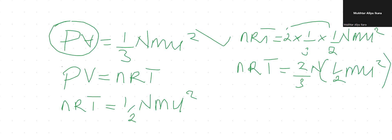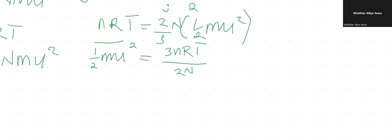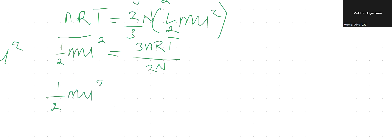We can now make (1/2)mu² the subject of the formula. Cross-multiplying and dividing both sides, we arrive at: (1/2)mu² = 3nRT / (2N).